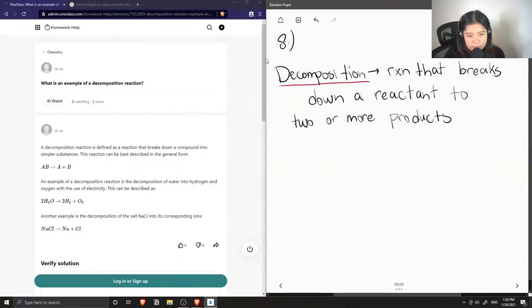Okay, so I'll give the general reaction scheme for a decomposition reaction. Let's say we had compound AB. This will break down to A plus B.